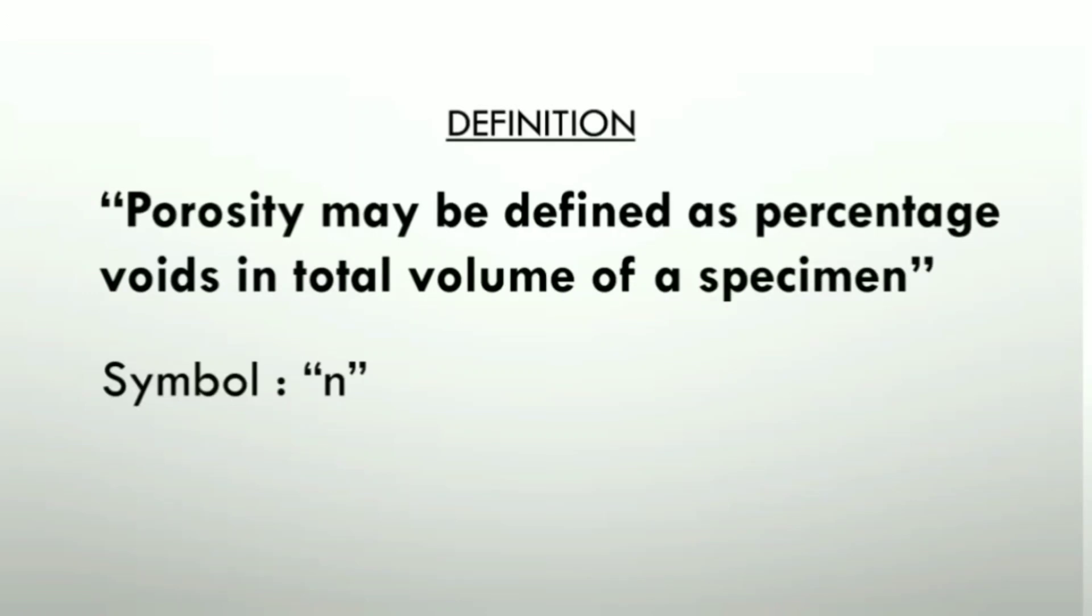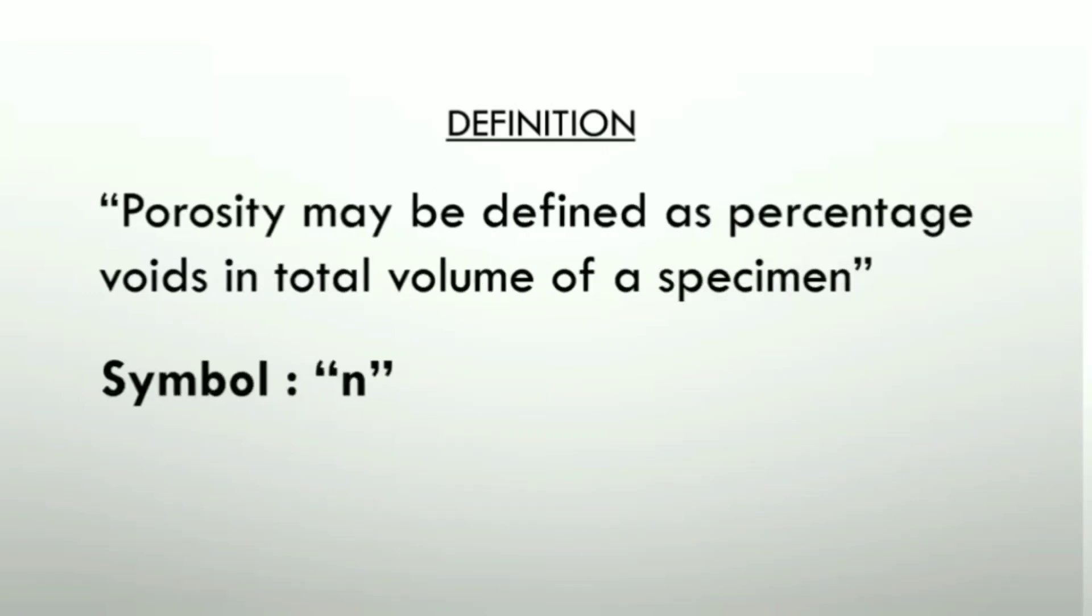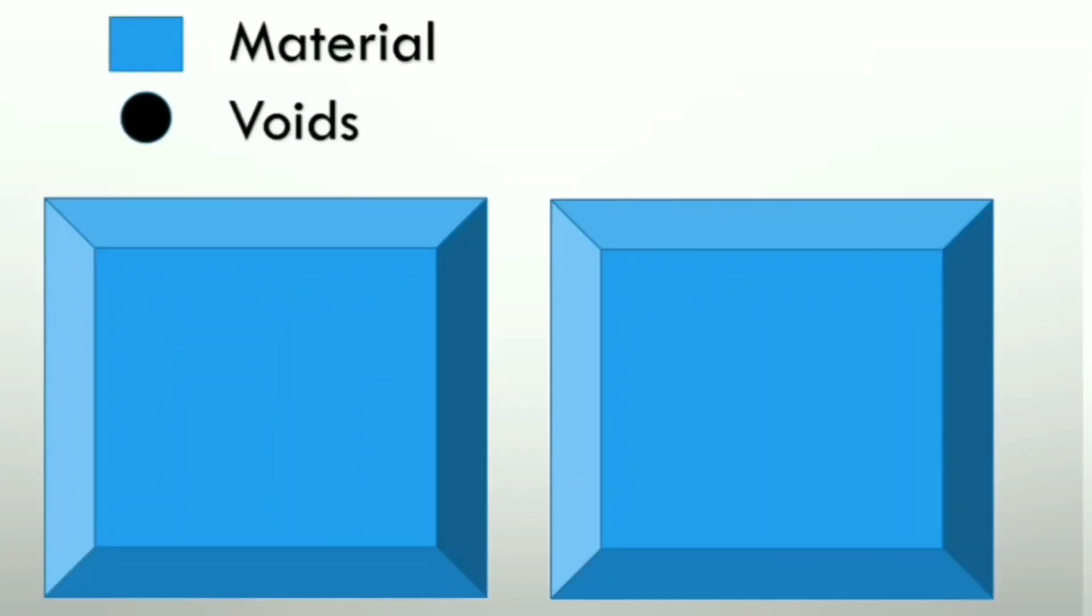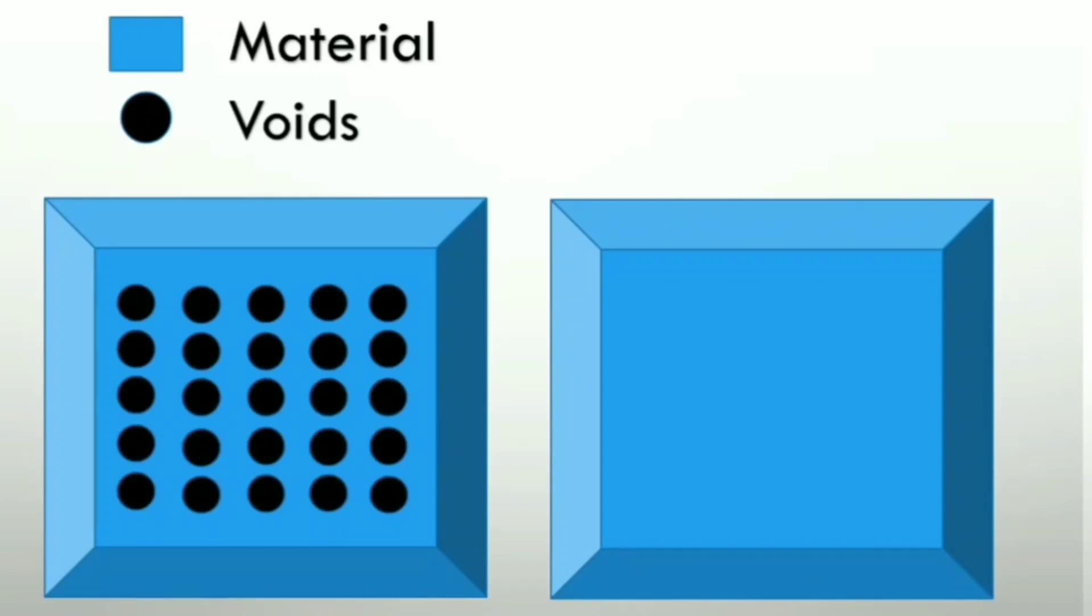in total volume of a specimen, and it is symbolized by small n. Now if we consider two different materials with different voids, the material on the left-hand side has more voids while on the right-hand side